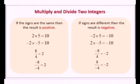Now we start the next topic: multiply and divide integers. If the signs are the same, the result is positive. If the signs are different, the result is negative. For example: 2 multiplied by 5 equals 10 because both are positive. Minus 2 multiplied by minus 5 equals positive 10 because both signs are the same. In division: 8 divided by 4 equals 2. Minus 8 divided by minus 4 also equals 2 because the signs are the same.